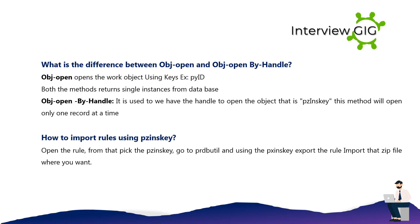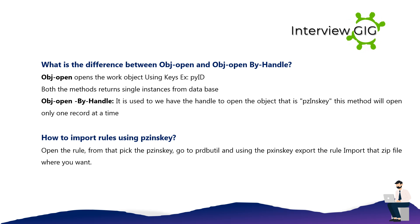What is the difference between OBJ Open and OBJ Open By Handle? OBJ Open opens the work object using keys such as pyad. Both methods return a single instance from the database. OBJ Open By Handle is used when we have the handle to open the object (pzSKI); this method will open only one record at a time. How to import rules using pzSKI? Open the rule, from that pick the pzSKI, go to the product button, and using the pzSKI export the rule and import that zip file where you want.